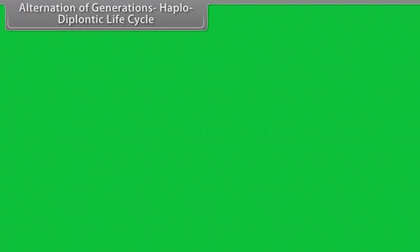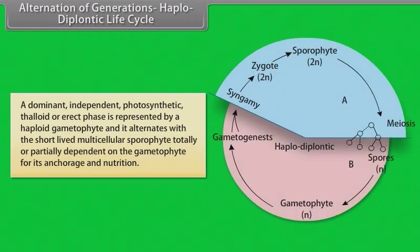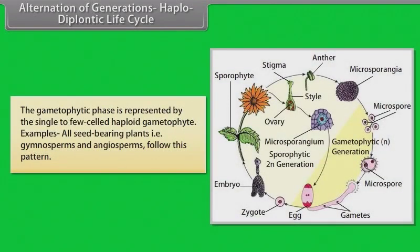In haplodiplontic life cycle, a dominant independent photosynthetic thalloid or erect phase is represented by a haploid gametophyte and it alternates with the short-lived multicellular sporophyte totally or partially dependent on the gametophyte for its anchorage and nutrition. The gametophytic phase is represented by the single to few-celled haploid gametophyte. Examples: all seed bearing plants, that is gymnosperms and angiosperms, follow this pattern.